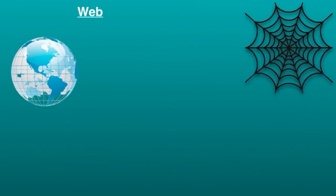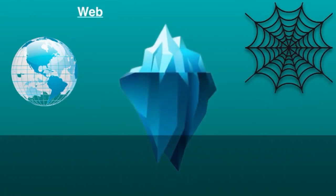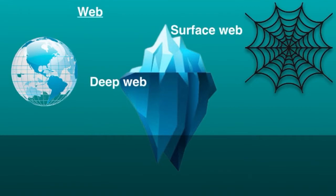It's best to imagine the web as an iceberg. The surface web is the top of the iceberg and is the easiest part to see or access. The deep web is the deeper part beneath the surface web. The dark web is the bottom of the iceberg, accessible only by using special technologies.